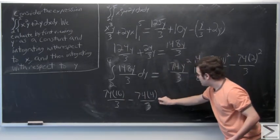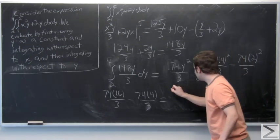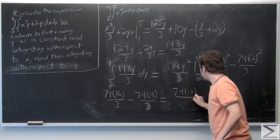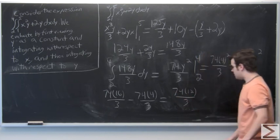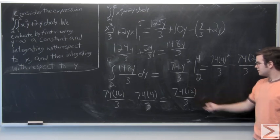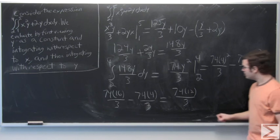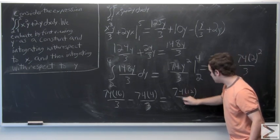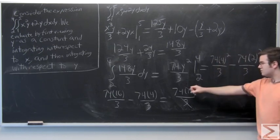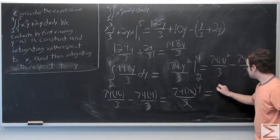Okay, and we can simplify this to be 74 times 12 over 3. And here we could reduce this further because 12 and 3 both have the factor of 3, and therefore we can cancel out the denominator and reduce 12 to 4. So we're left with 74 times 4, and this is equal to 296.